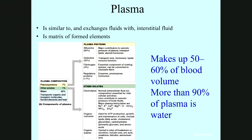Albumin is the major contributor to the osmotic pressure of the plasma and transports lipids, steroids, and hormones. Globulin transports iron, hormones, lipids, and carries out immune functions. One percent of the plasma represents other solid components — electrolytes such as calcium, magnesium, chloride, carbonate, bicarbonate, and phosphate groups.